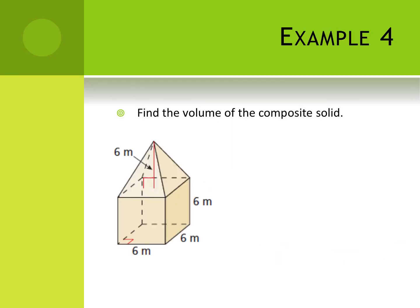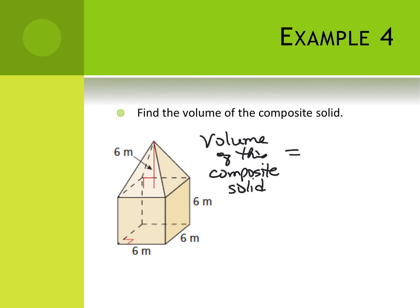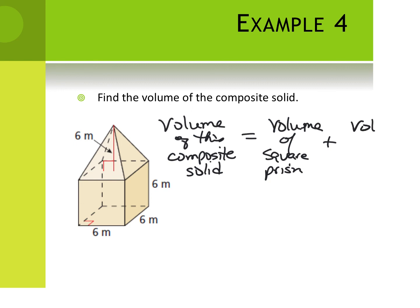Next is the volume of a composite solid. Whenever you have a complex composite figure, you find the volume of each part separately and then add them together. For this shape we're going to find the volume of the square prism on the bottom and add it to the volume of the square pyramid on top.